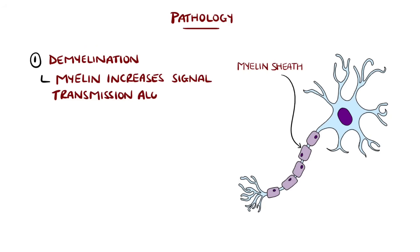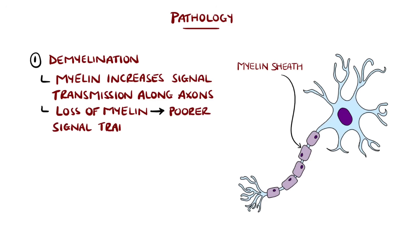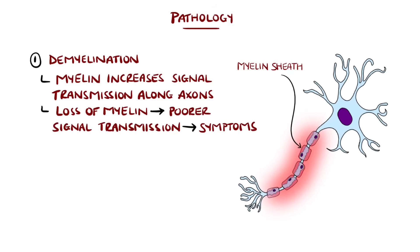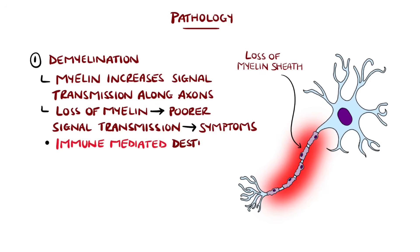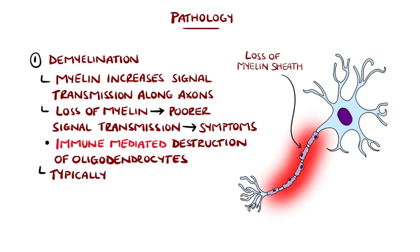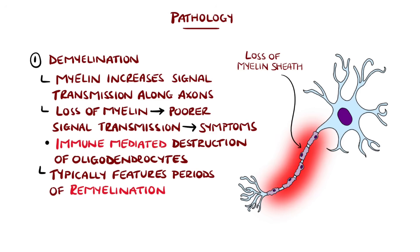The myelin sheath is the insulating sheath that surrounds axons of neurons and increases the rate of transmission of electrical signals. As this myelin is lost and signaling is impaired, symptoms appear. The exact reason this happens is not clear, but it is thought to be immune-mediated destruction or failure of oligodendrocytes, the myelin-producing cells.